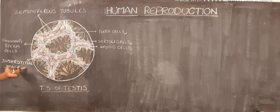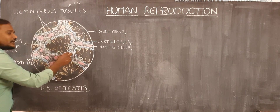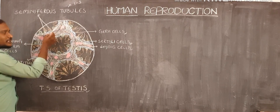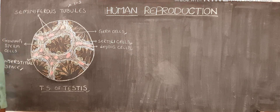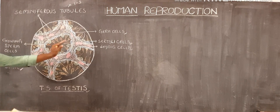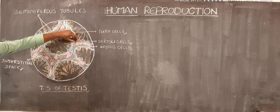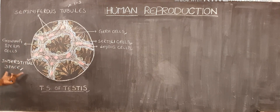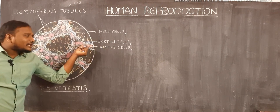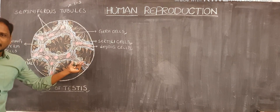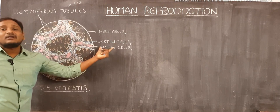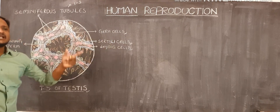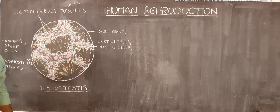The interstitial space is filled with interstitial fluid, and in that interstitial fluid there are irregularly shaped cells present. The interstitial space is the space present between the seminiferous tubules. That space consists of randomly arranged, irregularly shaped cells — those cells are also called Leydig cells. So in the TS of testes, three types of cells can be observed.